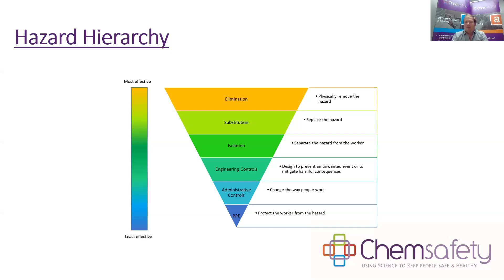Elimination means physically removing the hazard. For example, if we were making engineered stone benchtops, which have a quite high crystalline silica hazard — we simply decide we're no longer going to make engineered stone benchtops. That eliminates the hazard. It's not normally practical, and we don't normally go down that route, but sometimes it is the only option.